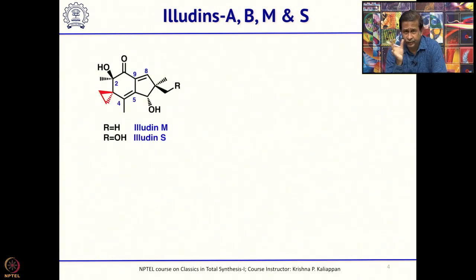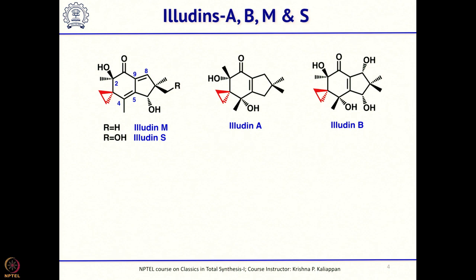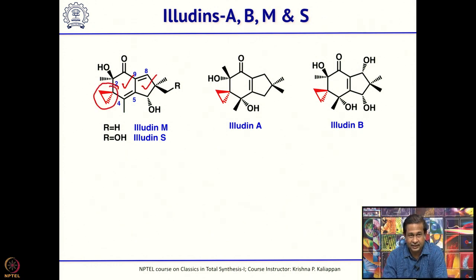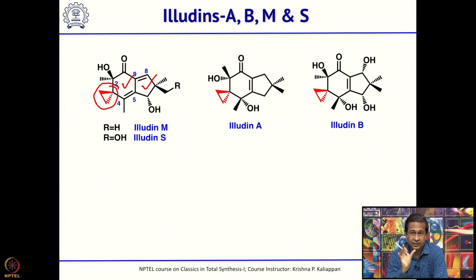There are many illudins—illudin A, B, M, and S. All of them have three rings: a 6-membered and 5-membered ring fused together, and the 6-membered and 3-membered rings are spiro-fused. Most of them are very closely related; only the functional groups are located at different places. They share a common basic skeleton of 6-membered, 5-membered, and 3-membered rings.